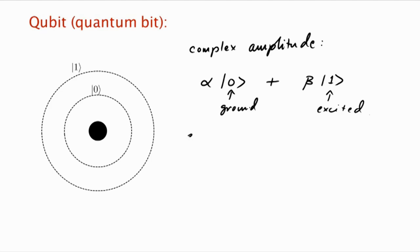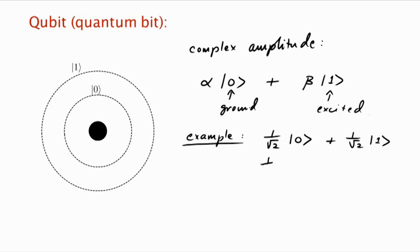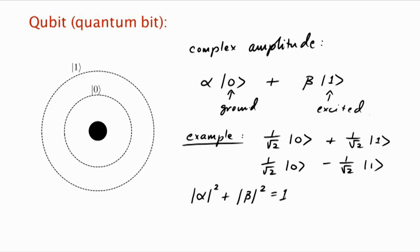Let's do a few examples. It could be that you were in the ground state with amplitude 1 over square root 2 and in the excited state with amplitude 1 over square root 2. You could also be in the ground state with amplitude 1 over square root 2 and in the excited state with amplitude minus 1 over square root 2. Why 1 over square root 2? Well, there's a condition that must be satisfied, which is that the state has to be normalized: the square of the magnitude of alpha plus the magnitude squared of beta must equal 1. You can see that's satisfied here: (1/√2)² + (1/√2)² = 1/2 + 1/2 = 1, regardless of the sign.